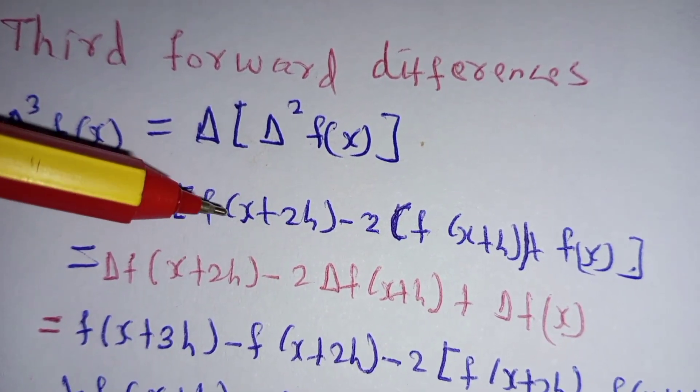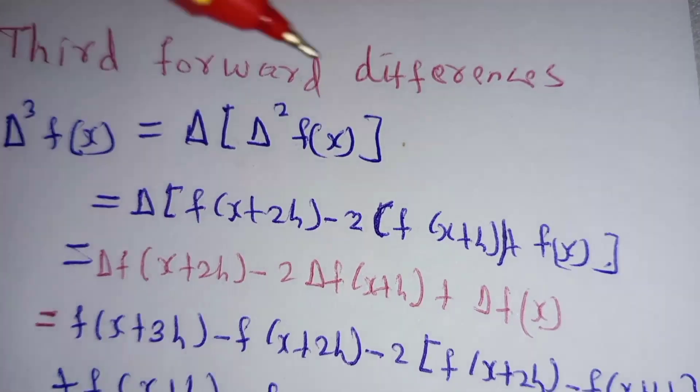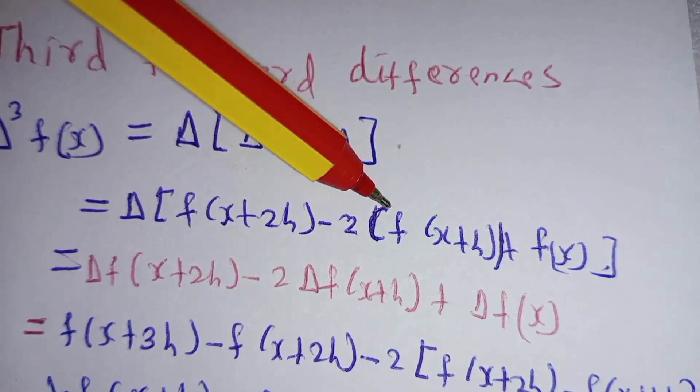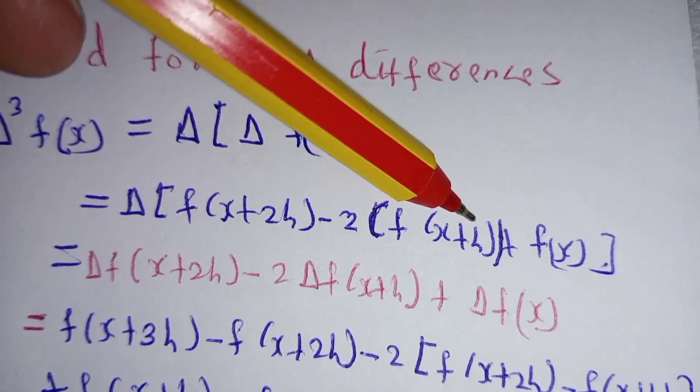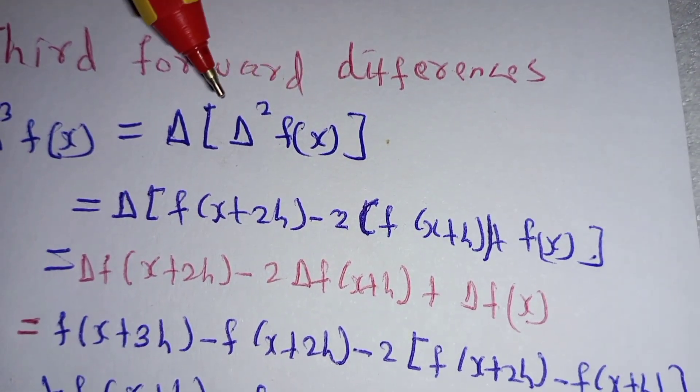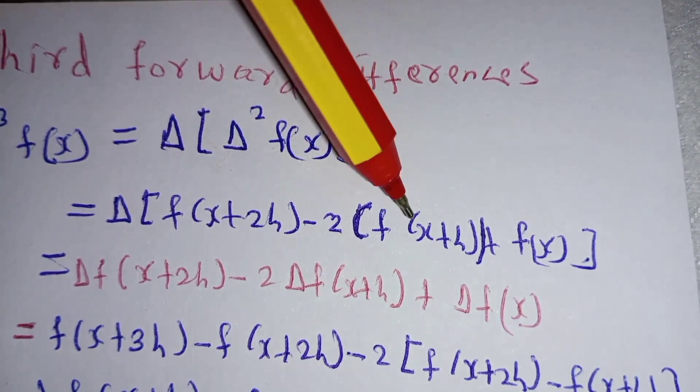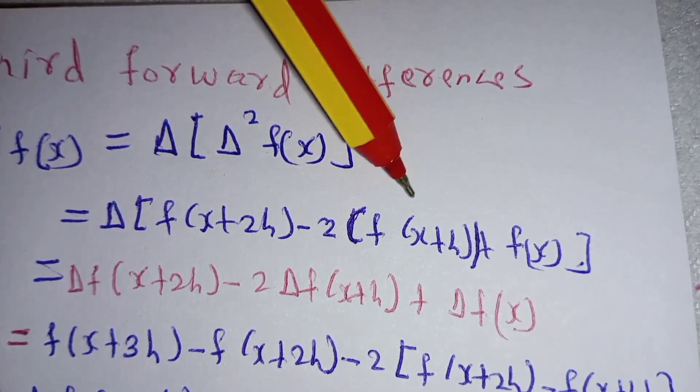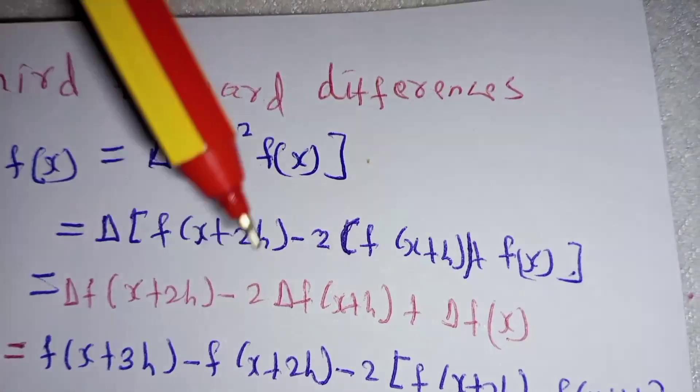f(x+2h) - 2[f(x+h)] + f(x). Now, to write the second forward difference, you can check my channel so that you may know how it is written.